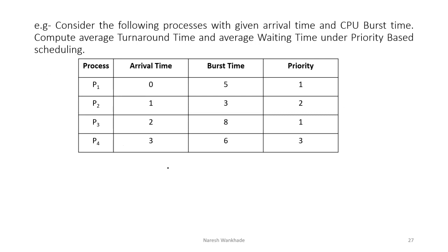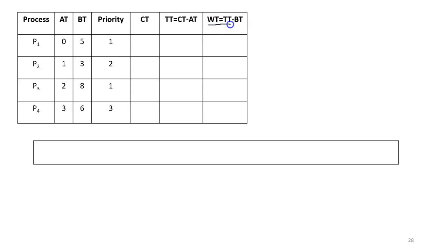Let's solve a problem based on priority based scheduling algorithm. Consider the following processes with given arrival time and CPU burst time. Compute average turnaround time and average waiting time under priority based scheduling algorithm. We have four processes, arrival time for each process is given along with burst time, and priority for each process is also mentioned in the last column. To compute waiting time, we first compute turnaround time, and for that we need completion time. Let's draw the Gantt chart first.